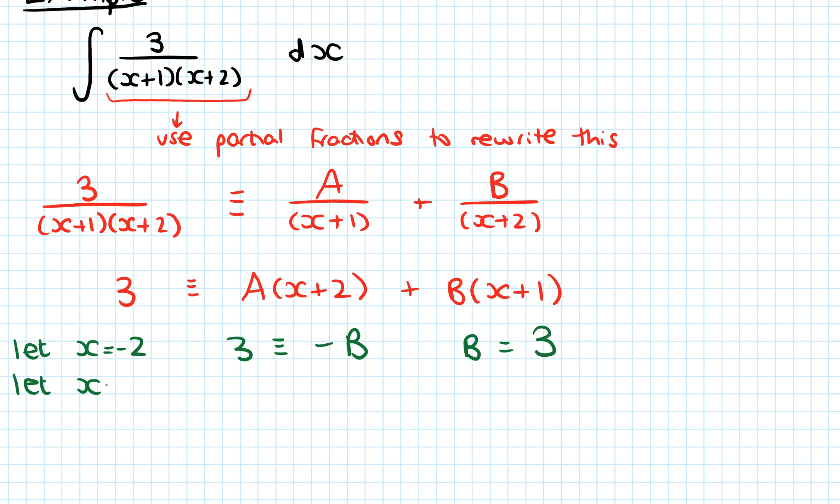And if I let x equal minus 1, in the first bracket here, minus 1 plus 2 is 1. So that's just A. And minus 1 plus 1, that's 0 B's. So A equals 3.